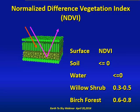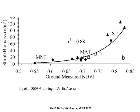In this example, willow shrub canopies might have an NDVI value ranging from 0.3 to 0.5, while a dense birch forest canopy might have NDVI values ranging from 0.6 to 0.9. Here's an example from NDVI spectral measurements made in the field in Alaska, where moist non-acidic tundra ranges in NDVI from about 0.55 to about 0.7.